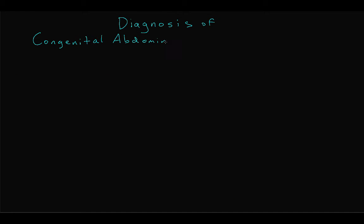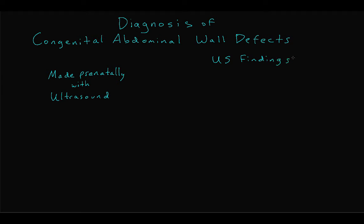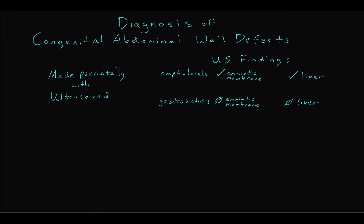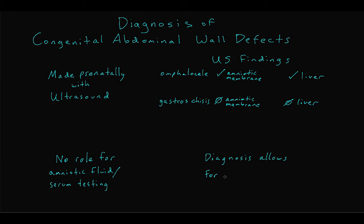Diagnosis of congenital abdominal wall defects is usually made prenatally with ultrasound, although infants can also be diagnosed at birth on physical exam. Omphalocele can usually be distinguished from gastroschisis on ultrasound because omphalocele has an amniotic membrane where gastroschisis does not, and the defect in omphalocele usually contains part of the liver while gastroschisis does not. Diagnosis with amniotic fluid or serum testing is not reliable. The main clinical benefit of prenatal diagnosis is that it allows for prenatal counseling for the parents; intervention is not typically pursued until birth.